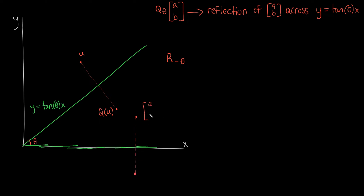Why is that useful? Well, if you're trying to reflect a point across the x-axis, that's a problem we know how to solve. If this is a pair of coordinates a and b, then reflecting across the x-axis doesn't change the x-coordinate, but it makes b, the y-coordinate, go negative. So a, b goes to a, negative b. We could rotate our point u, reflect across the x-axis, then rotate the answer a, negative b back by theta.